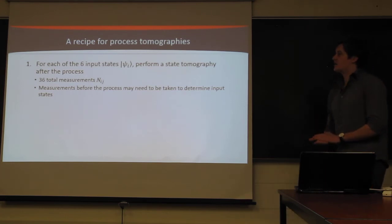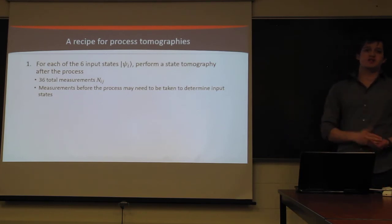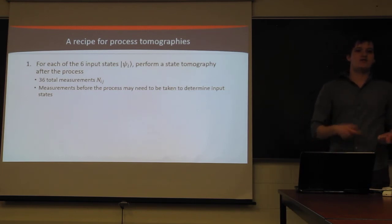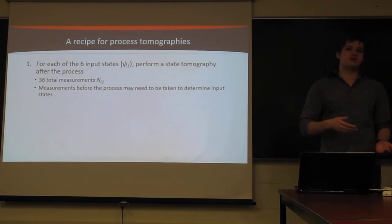So how are we going to actually go about performing a process tomography? We're going to start with our six input states, which follow the same rules as choosing our six measurement states. Generally speaking, again, you'll probably try and do H, V, D, A, L, and R. And then we're going to perform all of the same measurements as a state tomography for the output of our channel for each input state. Now this will give us 36 total measurements, six input states, six projections.